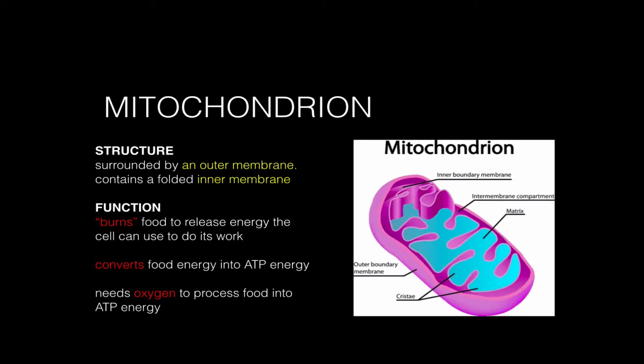What the mitochondria is really doing is converting or transforming food energy into a type of energy called ATP. ATP energy is the energy that all cells — from bacteria to plants to animals — everything uses to do work, to do the work that the cell needs to stay alive, reproduce, repair, and perform its functions. And to do this, the mitochondria needs oxygen. So the mitochondria has to take in oxygen and food, and it can then make ATP energy from these two reactants.